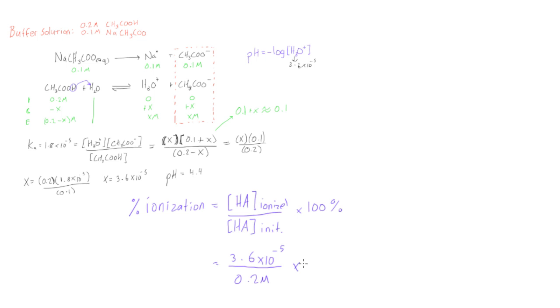If we multiply this by 100 percent and punch it into our calculators, we get 0.018 percent ionized. That's just how you do that. It works for basically any weak acid or weak base buffer. You can find the percent ionization.